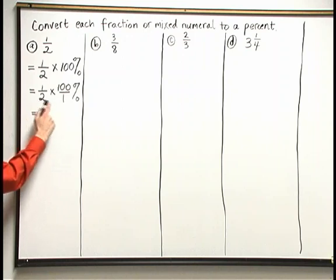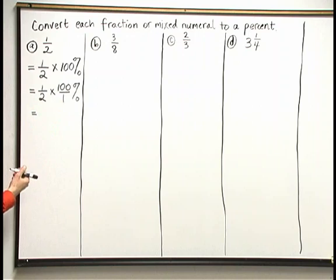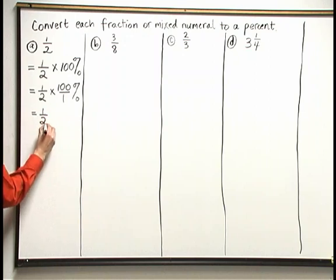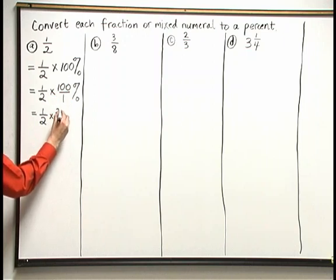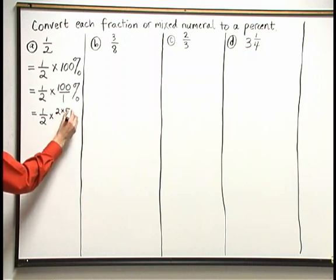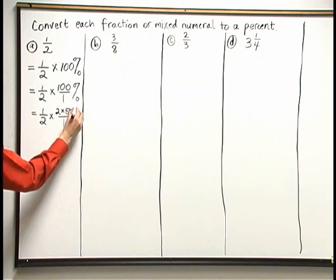The only number below to cancel is a 2. How many times does 2 go into 100? 2 goes into 1 50 times. In fact, I can write this problem as 1 half times, let's break down that 100 into 2 times 50 over 1 percent.